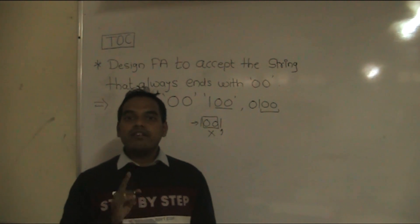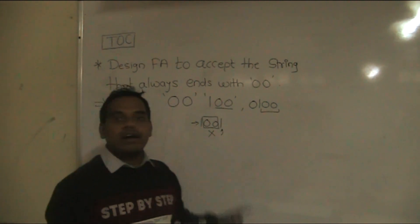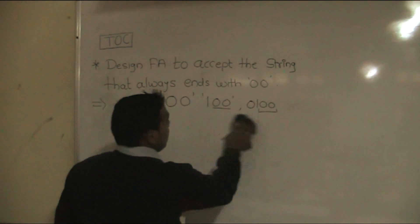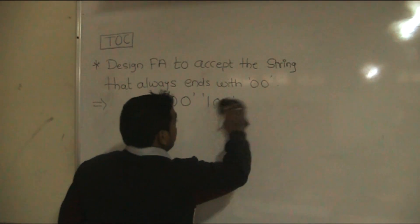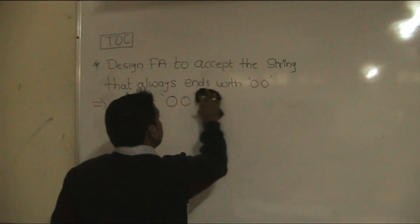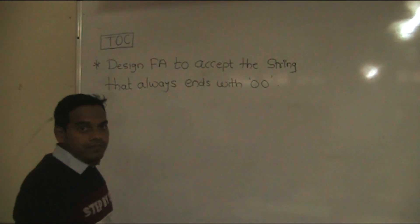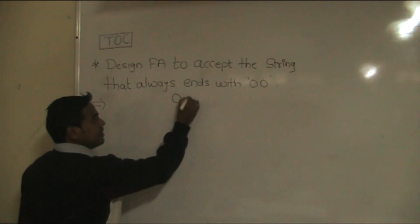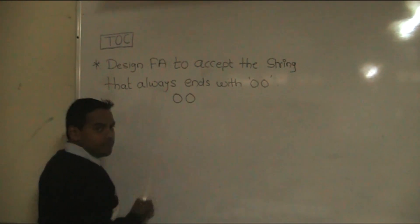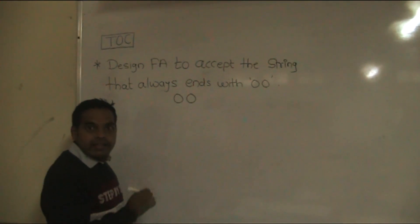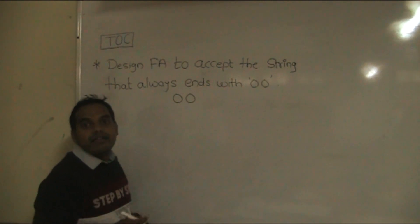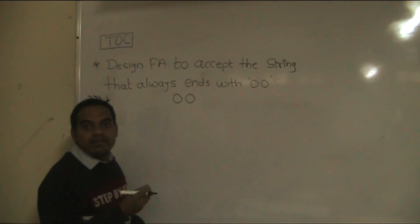So how do we design a finite automata in such a situation? We always consider firstly the minimum string. The minimum string is 00. We design the finite automata based on the minimum string, and after that we will add some of the other possible strings.